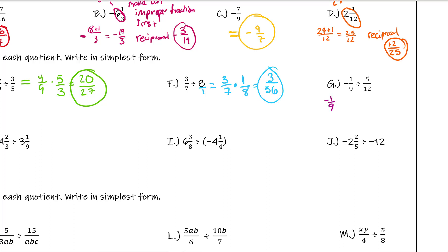So our new expression: we're going to keep the first number, negative 1 ninths, change it to multiplication, and flip the second fraction. That gives us negative 1 times 12 is negative 12, and 9 times 5 is 45. In this case we can simplify — both are divisible by 3. 12 divided by 3 is 4, giving us negative 4; 45 divided by 3 is 15. So the answer is negative 4 over 15.